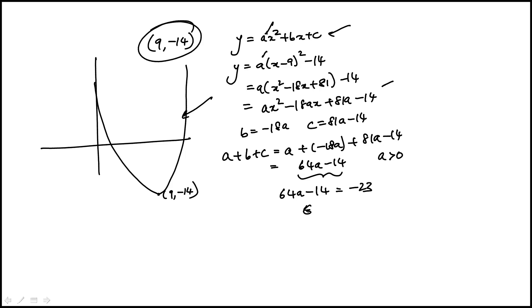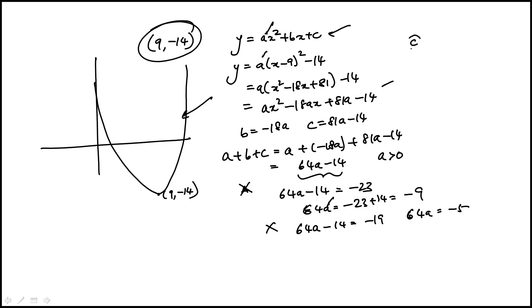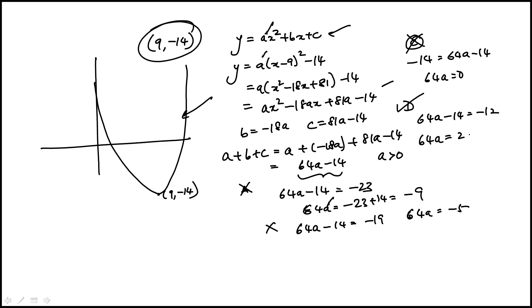For choice A: 64a - 14 = -23, so 64a = -9, meaning a is negative — doesn't work. Choice B also gives a negative value for a. Choice C gives 64a = 0, which doesn't work either. For choice D: 64a - 14 = -12, so 64a = 2, meaning a = 1/32, which is positive.